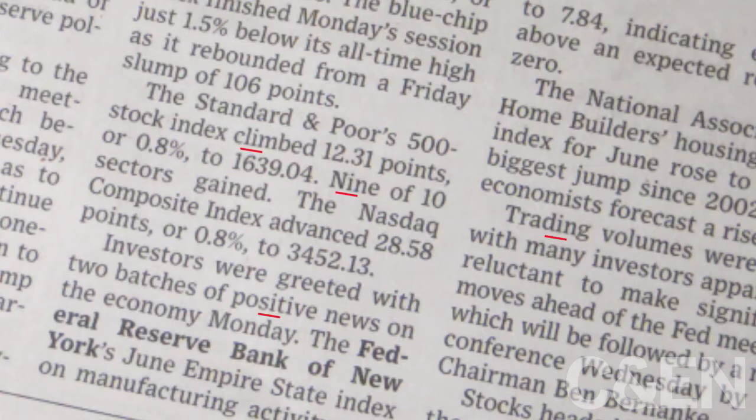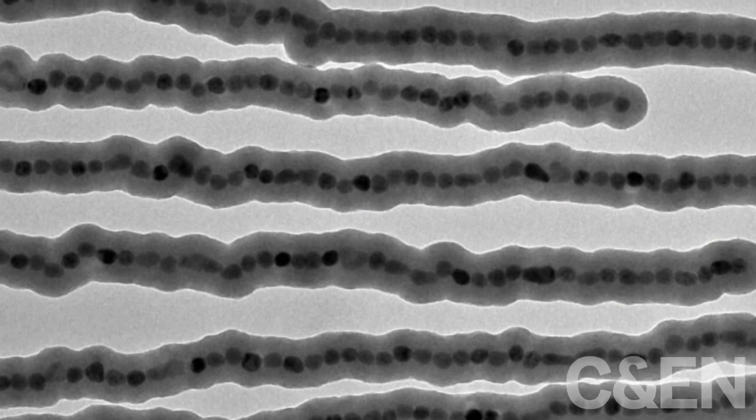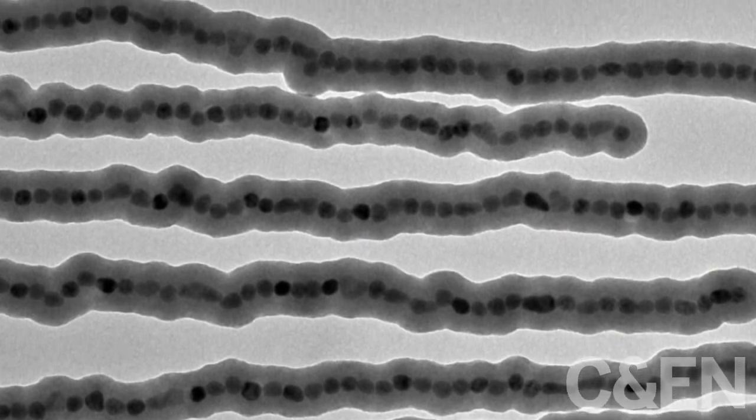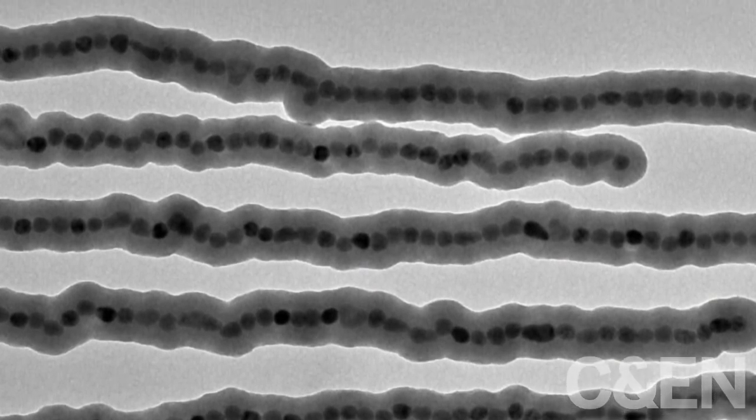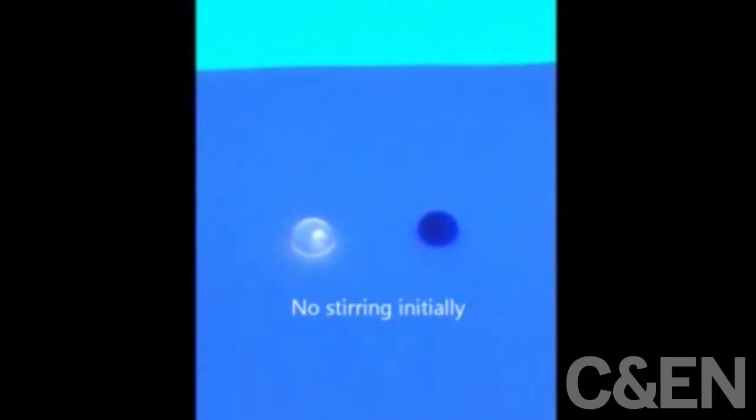The researchers use chemicals to get the particles to dissolve in water, and then align the particles with a magnet. Once they've got their magnetic dots in a row, the researchers give them a coating of silica, the stuff that sand is made of, to hold them together.